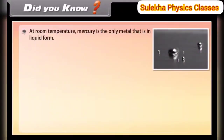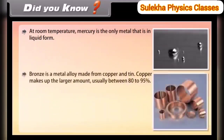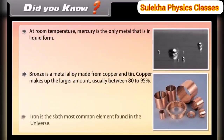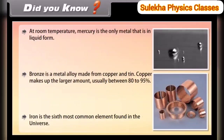Did you know? At room temperature, mercury is the only metal that is in liquid form. Bronze is a metal alloy made from copper and tin, with copper making up the larger amount — usually between 80 to 95 percent. Iron is the sixth most common element found in the universe.